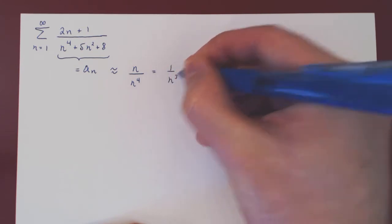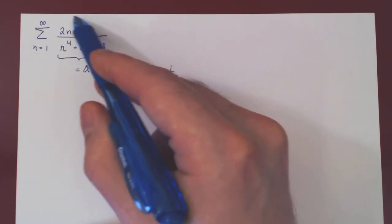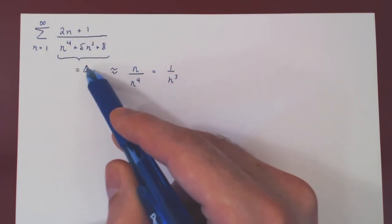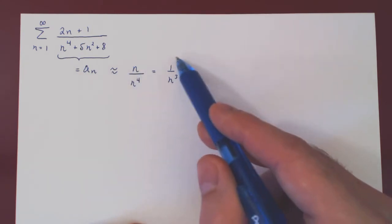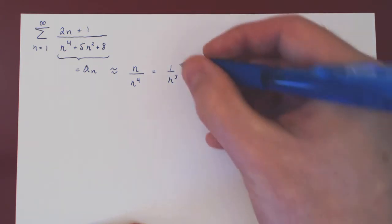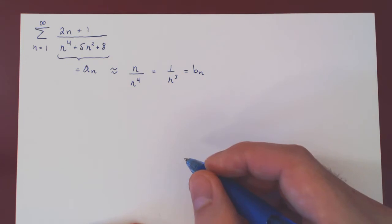And this is now the intuition. When N is large, sure we are summing a complicated looking sequence, but when N is large, we're really just summing roughly 1 over N cubed, which will give us a convergent P series. And this is now our BN, the much simpler sequence.